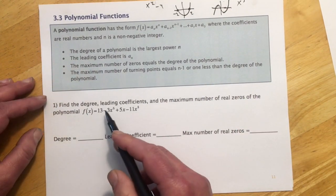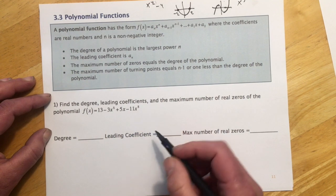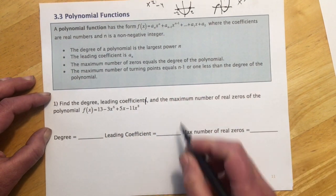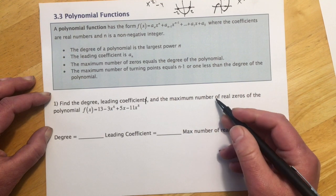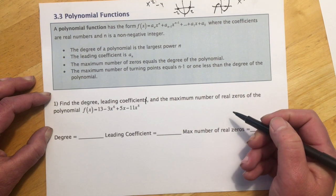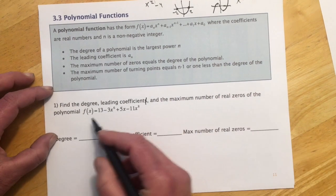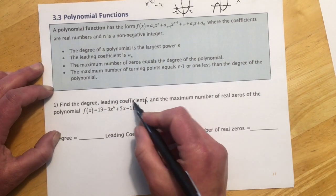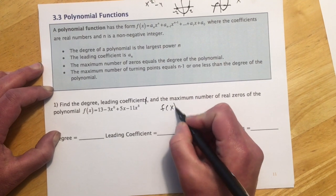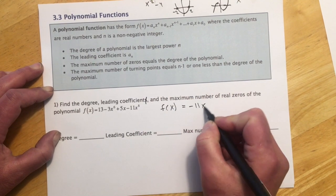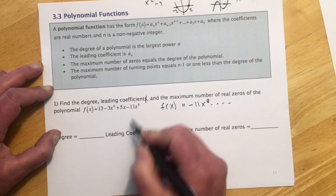So with the first question we have, find the degree, leading coefficient, and maximum number of zeros for the polynomial. So first off, this thing isn't written in descending order, so if I were going to go and do that, the first term would have really been f(x) equals negative 11x to the 8th, and then it would have gone from there.